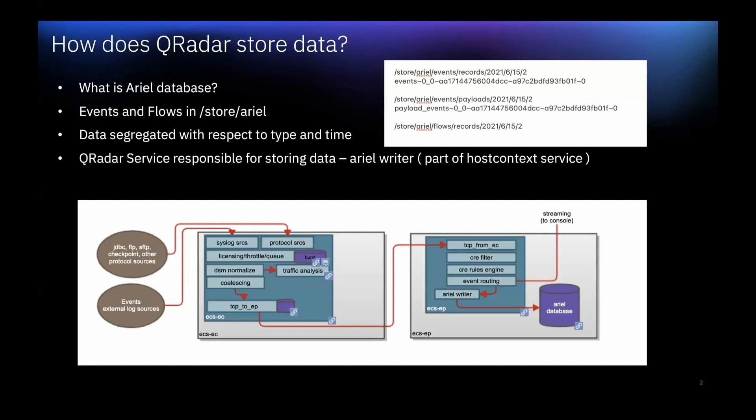QRadar stores data in the Ariel database, which is a custom minute-by-minute event database created by the QRadar dev team, to capture and write events to the disk in /store/ariel. Event and flow data is stored locally in the /store/ariel directory for each QRadar appliance where the ECP process runs. Data is stored in one-minute time chunks that can be seen in the top-right screenshot.